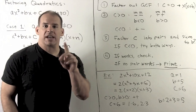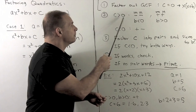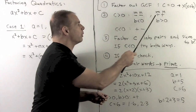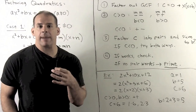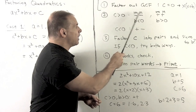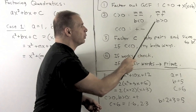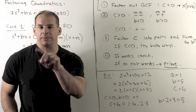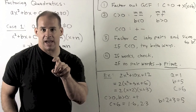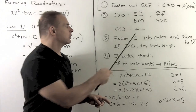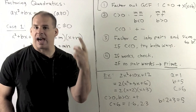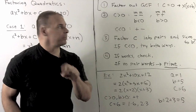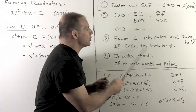The first real step: we check the sign on c. If c is positive, then c equals m times n means m and n have to have the same sign — either both negative or both positive. The way we determine that, we check b. If m and n are both negative, we would get a negative b. If m and n are both positive, we would get a positive b. If c is negative, m times n is negative, which means one is positive and one is negative, so we'll have one of each.